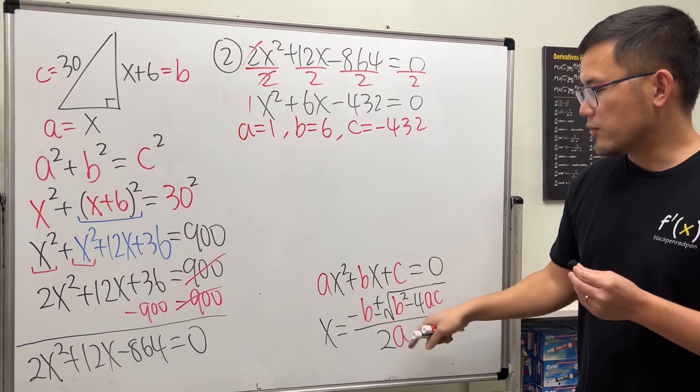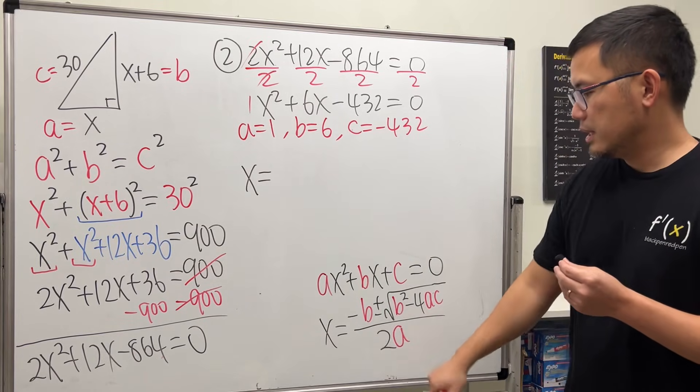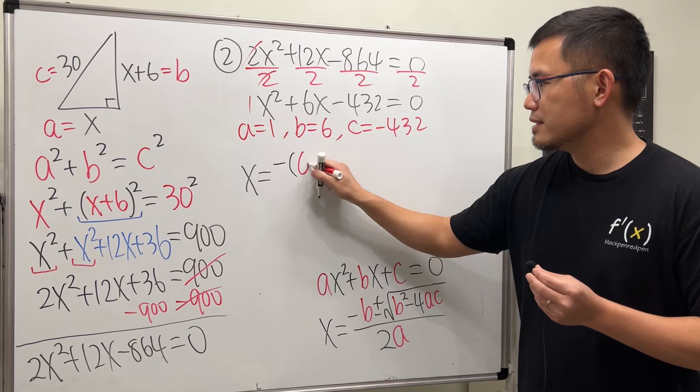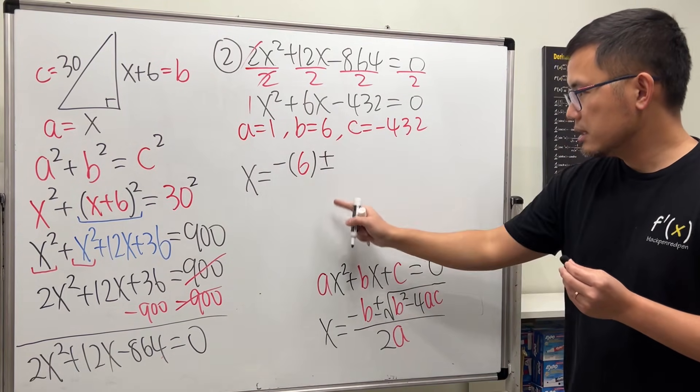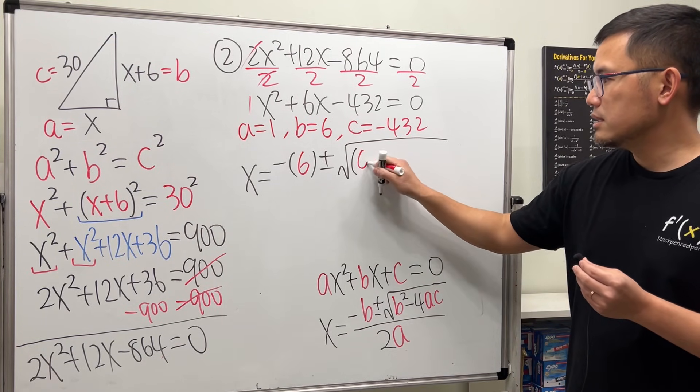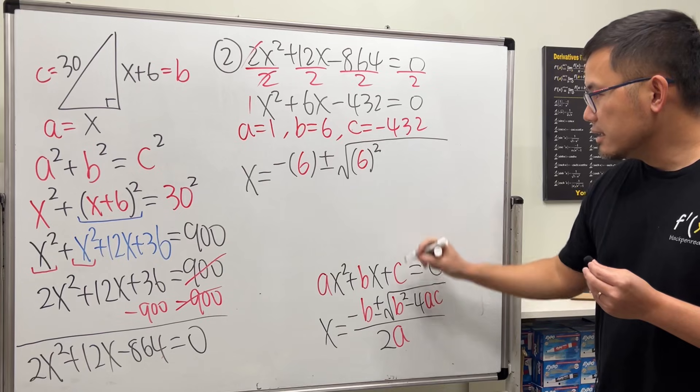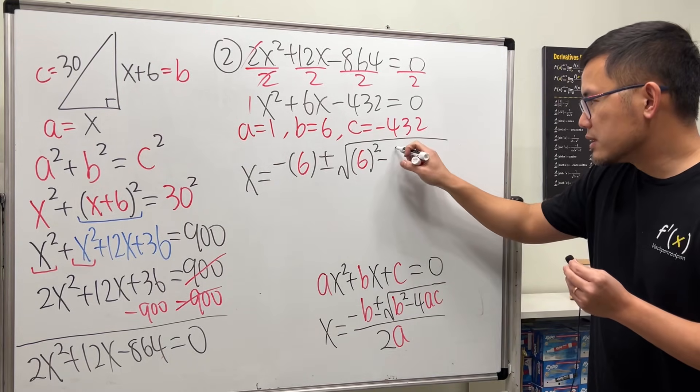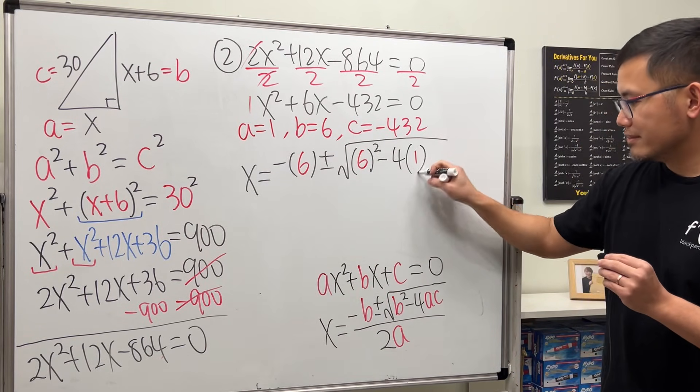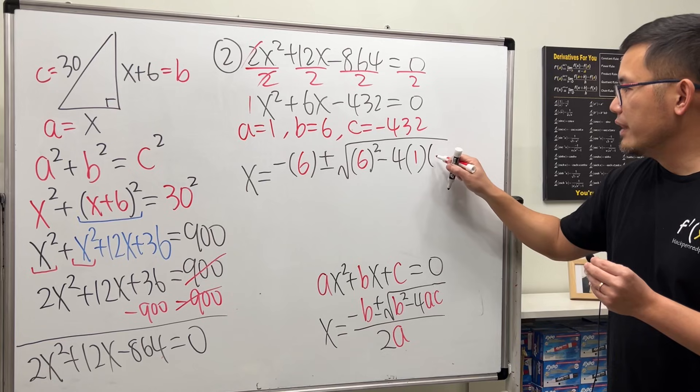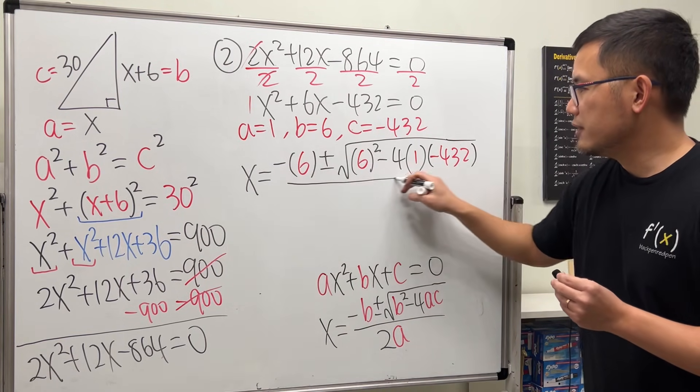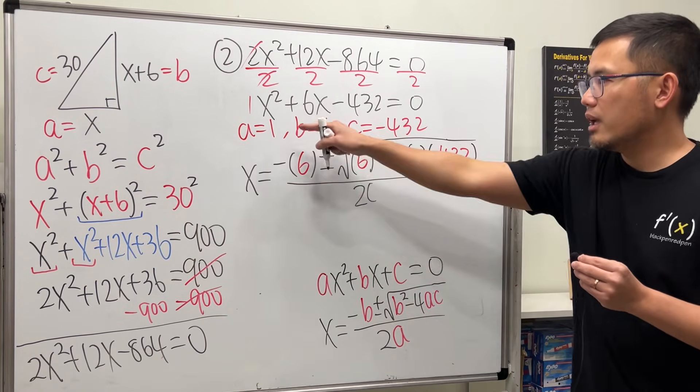Now, we can just run these numbers into this formula, and we get x = -b. So, we have negative. b is 6. And then plus or minus. Open the square root. We have the b². So, 6². Minus. The formula says there's a 4. So, minus 4 times a is 1. And then c is that, -432. And then all divided by 2 times a, a is 1.